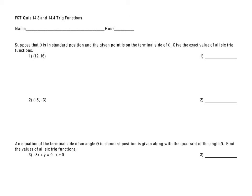For problem number one, we are given the point (12, 16), which is on the terminal side of an angle in standard position. Sketching that in the first quadrant, we can draw a right triangle where one side is 16 and the other is 12. Using the Pythagorean Theorem, the third side R equals the square root of 12 squared plus 16 squared, which is the square root of 400, so R is 20.